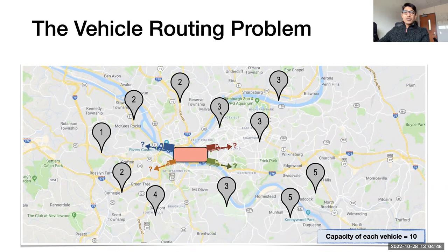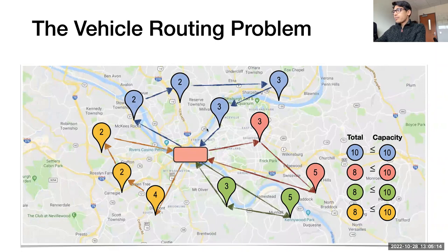The vehicle routing problem essentially asks two questions. The first is a bin packing component: which vehicle must serve which customer, so that the total load on that vehicle is less than its capacity? The second question is: in which order must these customers be visited so as to minimize the distance traveled? In some sense, it's both a bin packing problem and a TSP in one. A solution might look something like this, where the total load on each colored route representing a different vehicle is less than the vehicle capacity.